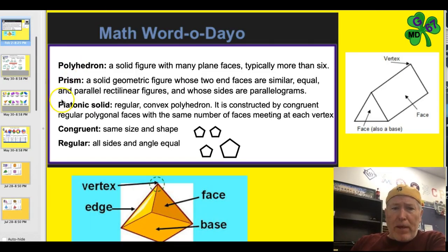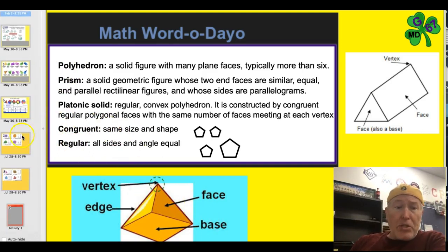So we've got our three Ps, and we've got congruent, regular, vertex, edge, face, base. Let's try some.